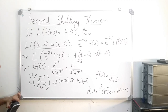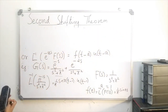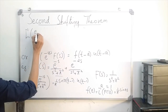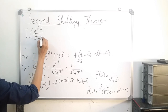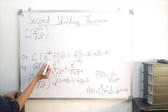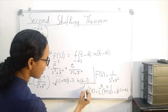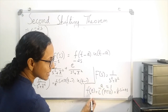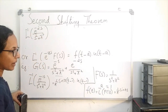Similarly, we can find the inverse of the second term. The inverse Laplace of e raised to minus 2s divided by s squared plus pi squared. Since the function f of s is the same, 1 over s squared plus pi squared, the inverse of f of s is again f of t, which is 1 over pi times sin of pi t.